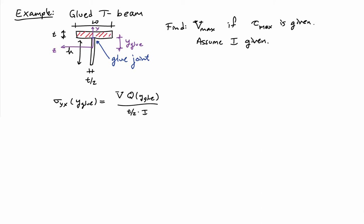That's going to be equal to the area, the shaded area, which is t times w, times the distance to the centroid of that area. The centroid is located right in the middle, so that's going to be y-glue plus t over 2.